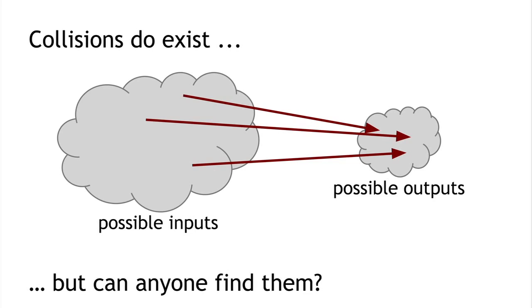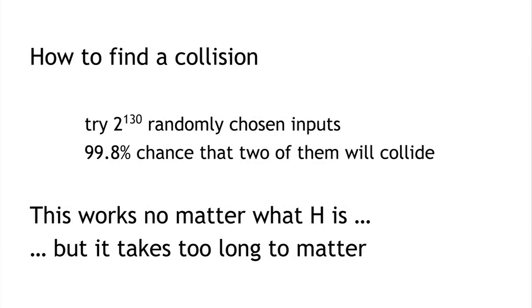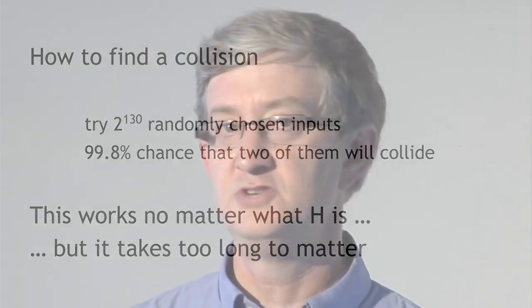Nobody can find a collision — that's the key claim. There is a method that's guaranteed to work: pick 2^130 randomly chosen inputs. There's a 99.8% chance that at least two of them will collide. But this takes 2^130 steps — an astronomical number. In fact, if every computer ever made by humanity had been computing since the beginning of the entire universe up to now, the odds that they would have found a collision would still be infinitesimally small — way less than the odds that the Earth would be destroyed by a giant meteor in the next two seconds, which didn't happen.